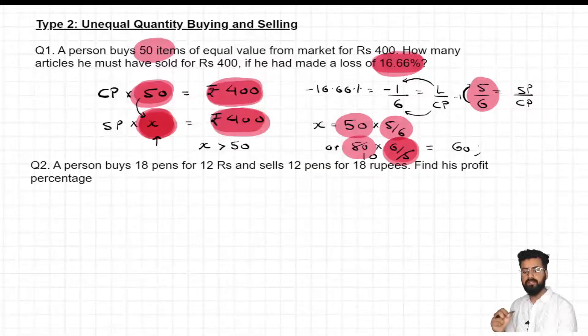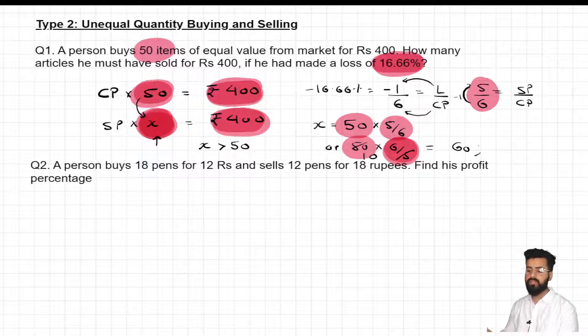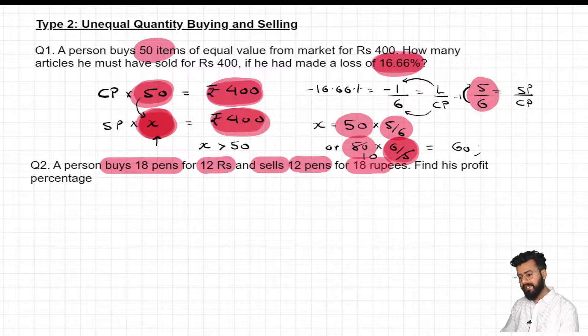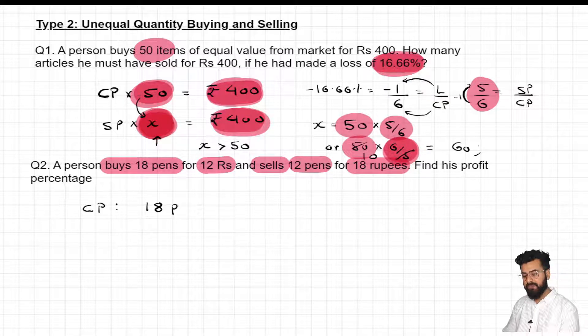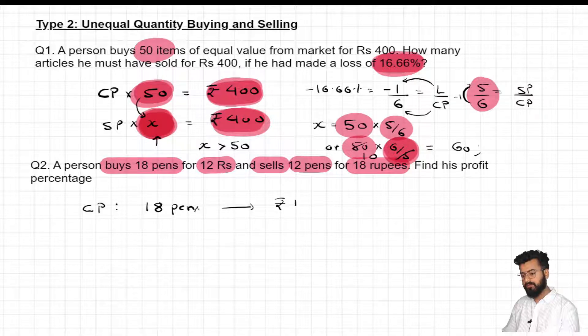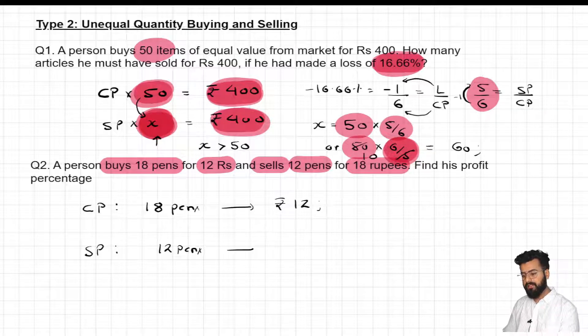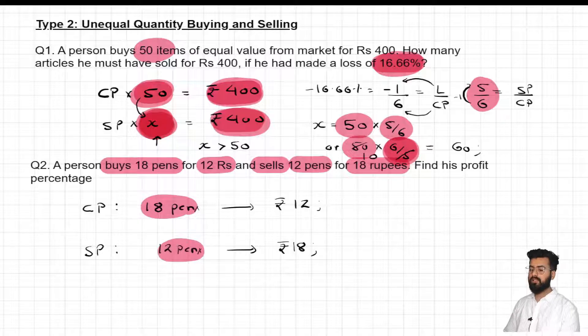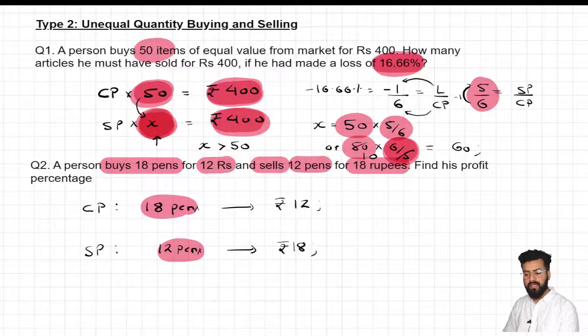Now after understanding this question, it's time to discuss one more question, a variation based on type 2. Again you would find the same thing happening. Unequal quantity buying and selling. Let's read the question once. A person buys 18 pens for 12 rupees and sells 12 pens for 18 rupees. Let me write down the data for you. He has purchased, it means the cost price is given. Cost price for how many pens? You would say sir, he has purchased 18 pens for rupees 12. Okay. And when it comes to selling them, he has sold 12 pens for rupees 18. This is what we are given with. Now what I want you to look at, if you look at the quantity, quantity purchased and sold. These two are unequal quantities. And therefore I cannot compare it directly. So to compare them, what I'm going to do, I'm going to make the quantity value same.